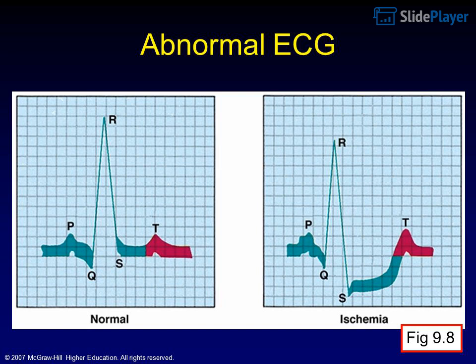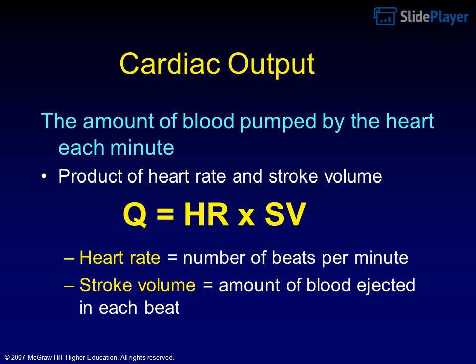Cardiac output (Q) equals heart rate times stroke volume — the amount of blood pumped by the heart each minute. It is the product of heart rate and stroke volume. Heart rate equals the number of beats per minute; stroke volume equals the amount of blood ejected in each beat. So Q = HR × stroke volume.